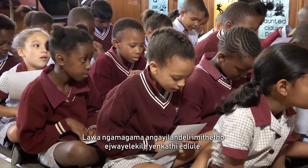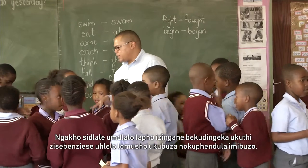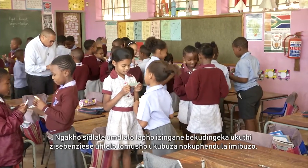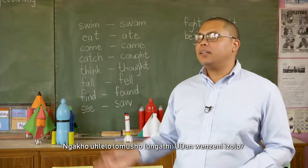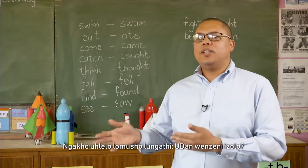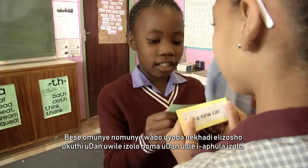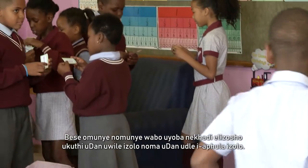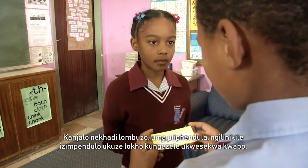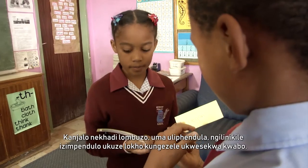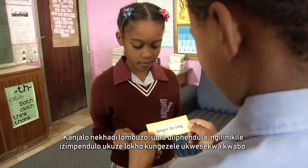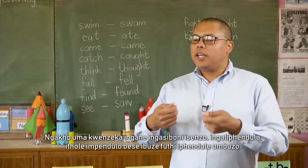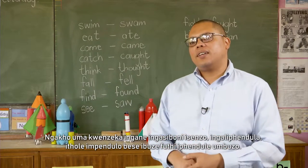These are the words that do not follow the regular rules of past tense. We played a game where children had to use a sentence structure to ask and answer questions. The sentence structure would say, 'What did Dan do yesterday?' and each child would have a flash card that would say 'Dan fell yesterday' or 'Dan ate an apple yesterday.' With the question cards, if you turn them around, the answer is also given, so that provides more support. Just in case the child doesn't recognise the verb, they can flip it over, get the answer, and then ask and answer their friends.